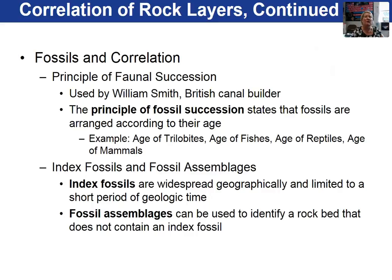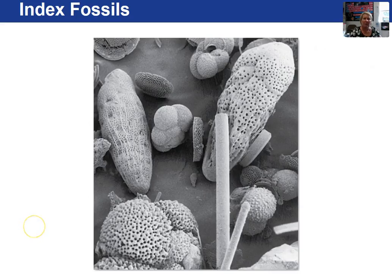An index fossil is meaningful because when you find it in a rock layer, it can tell you very precisely about the age of that rock layer, since the fossil only lived for a short period of time. These microfossils seen under a scanning electron microscope make good index fossils because they are widespread but existed for a very short period of time — they appear and then become extinct fairly quickly, leaving their record and allowing us to determine the age of a rock layer they are found in.